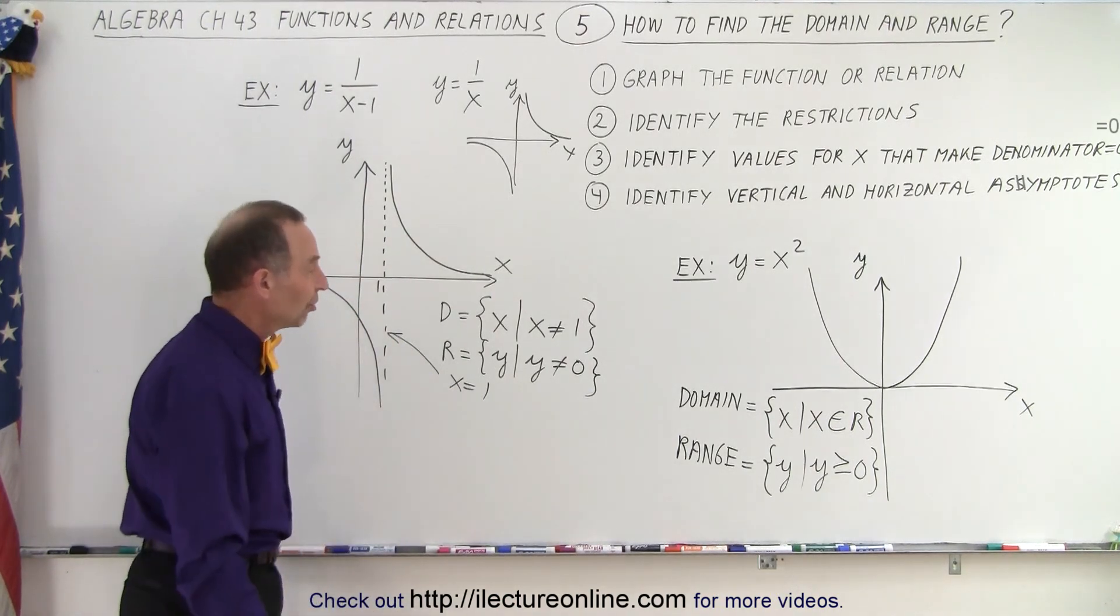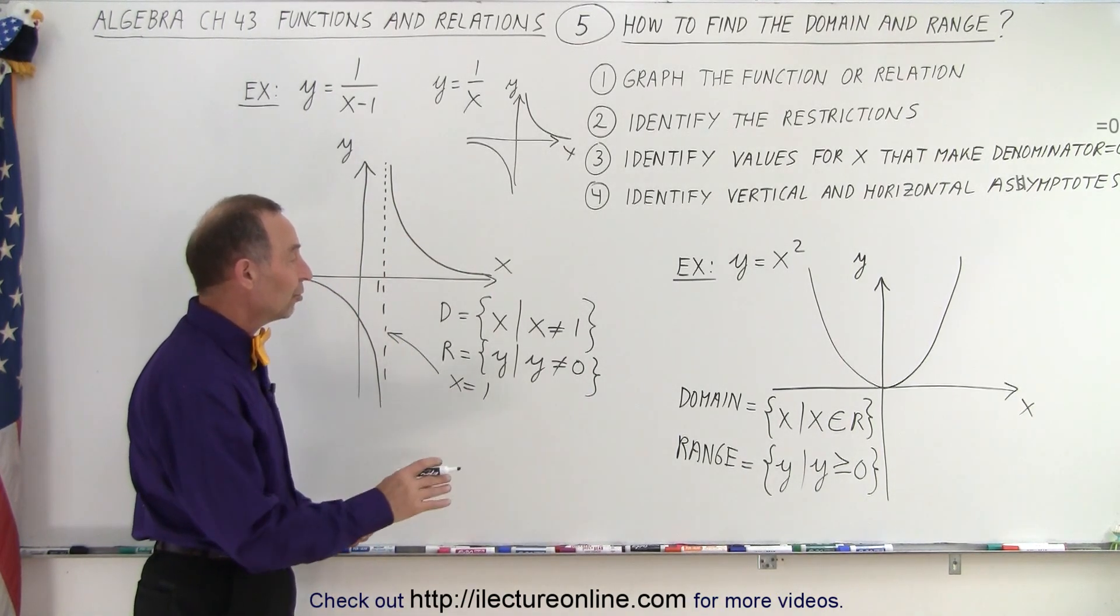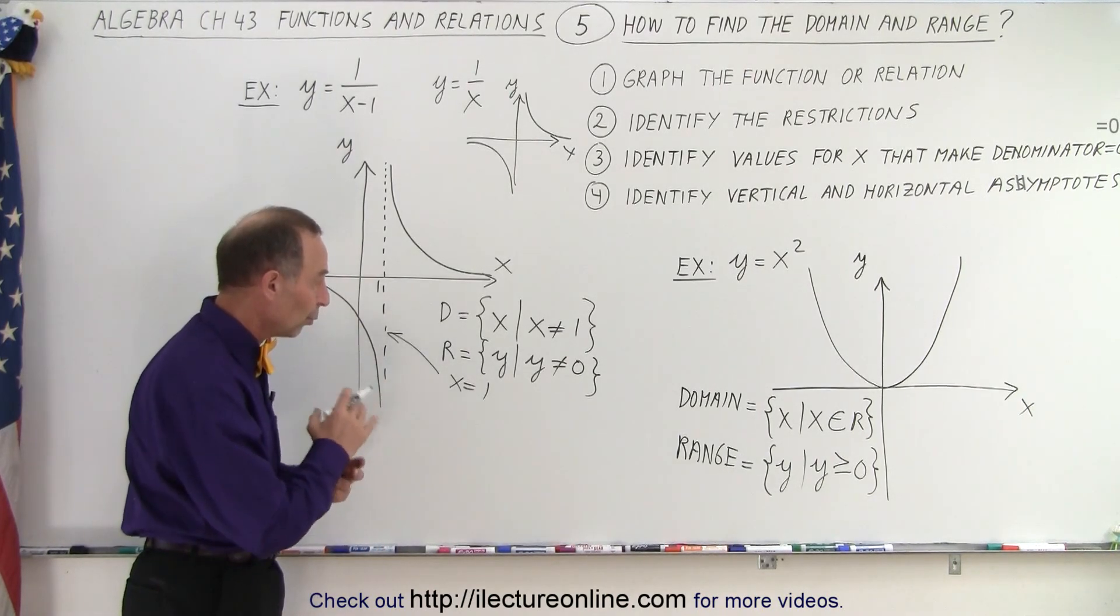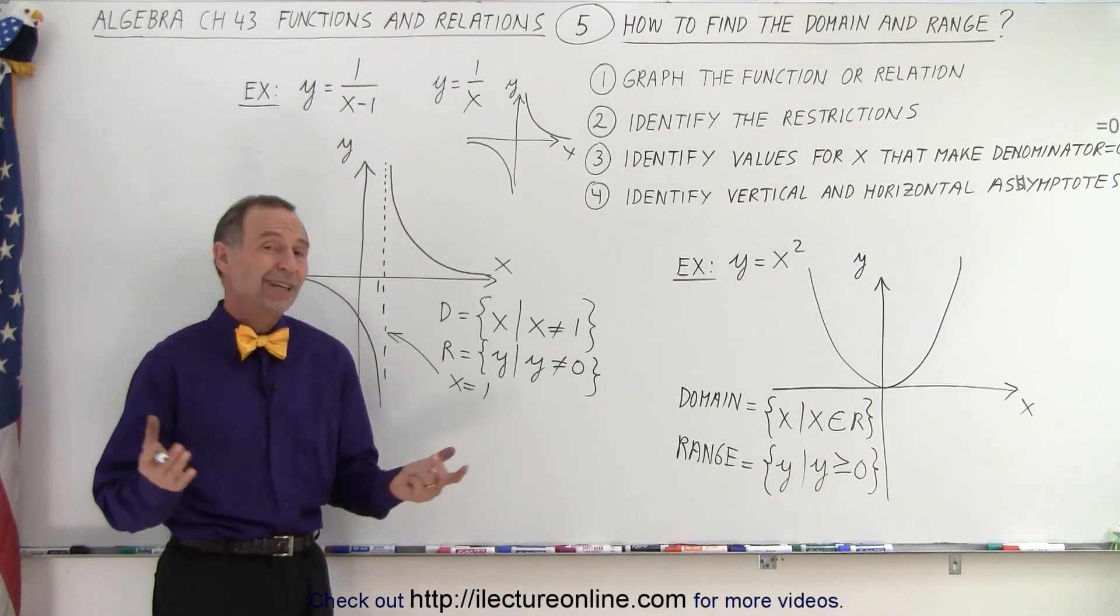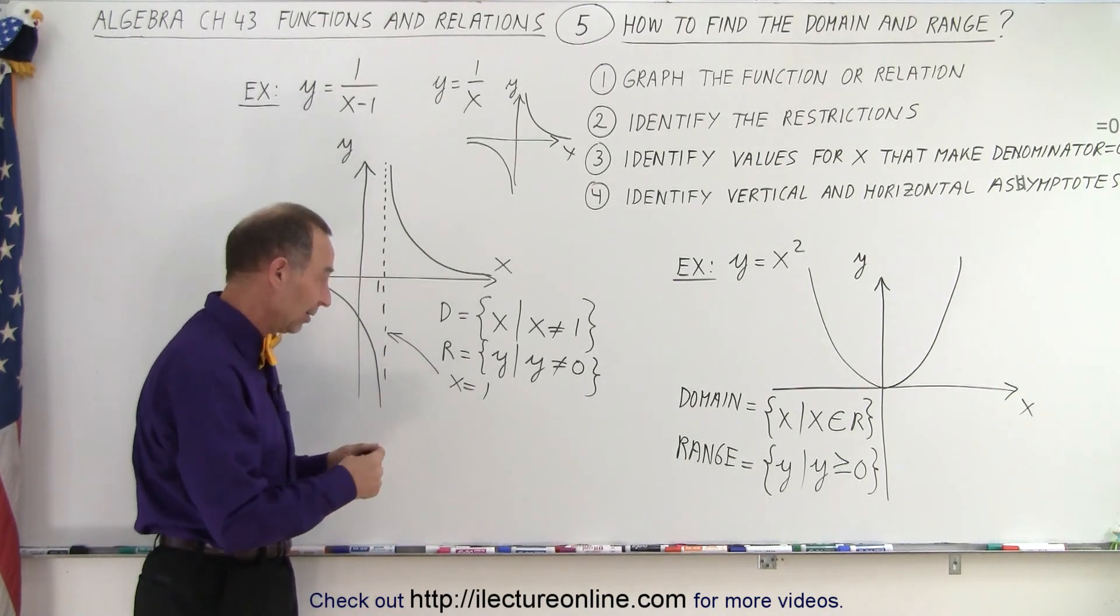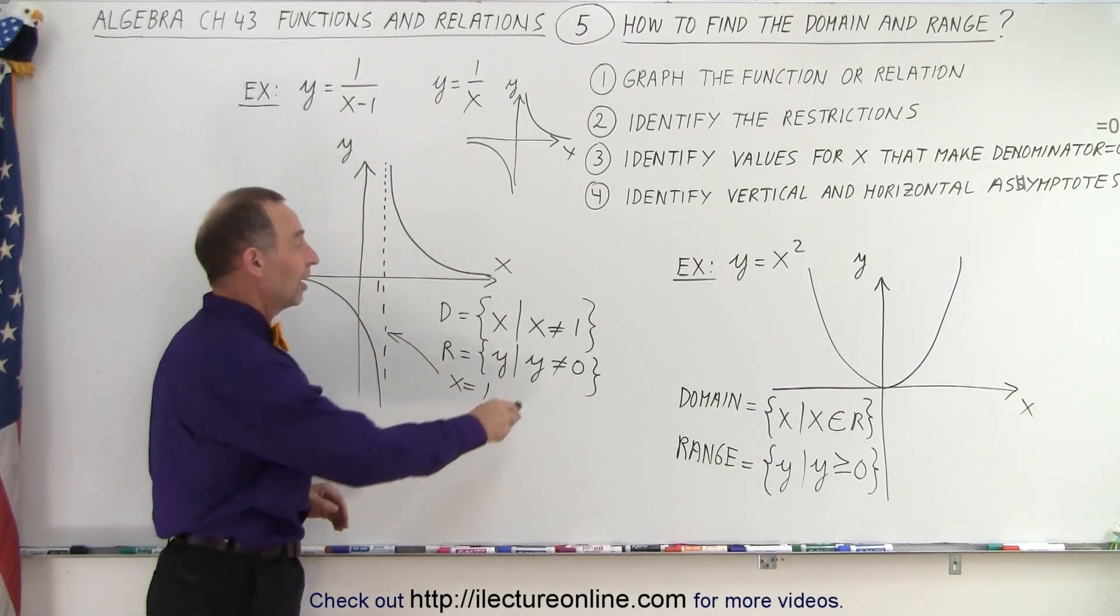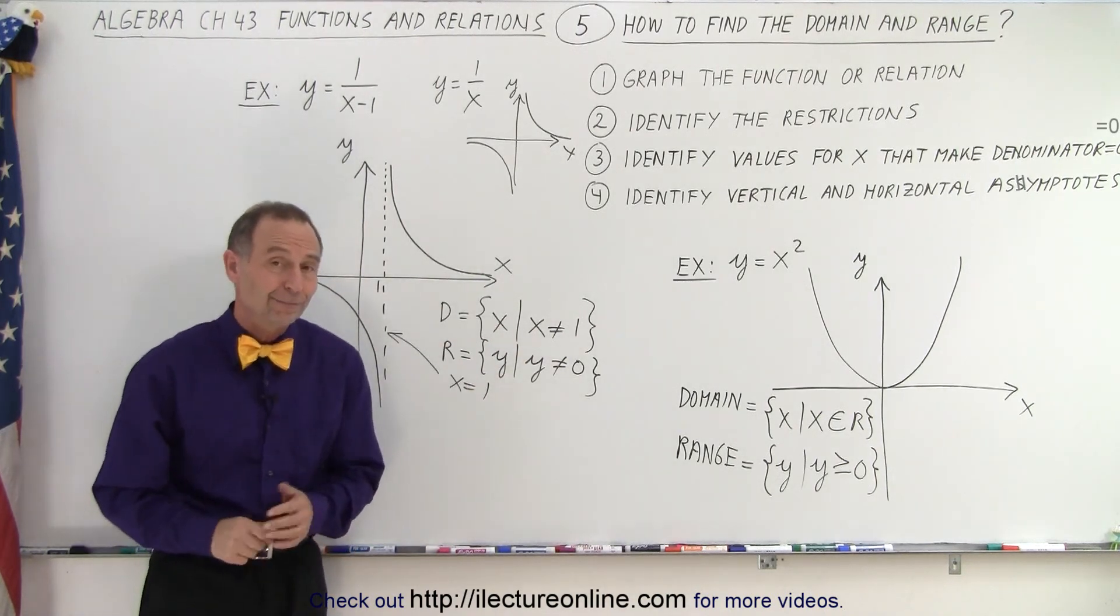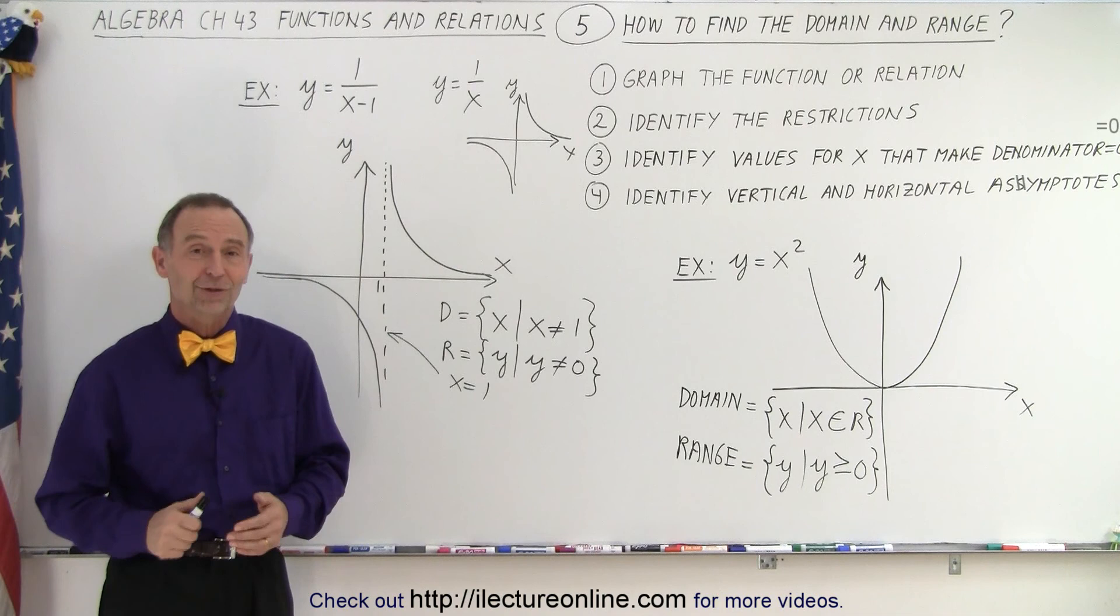You can be more explicit. You could say it's the set of all numbers, except x not equal to 1, the set of all numbers except y not equal to 0. But either way, it makes it plenty clear that x can be all numbers, except equal to 1, and y can be all numbers, except equal to 0. And that's how we express the domain and the range.